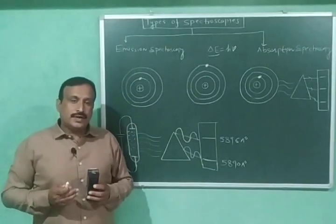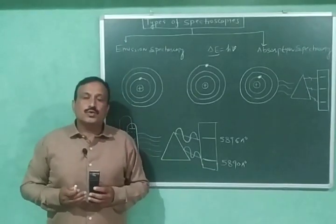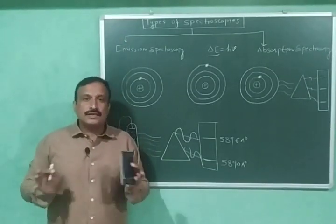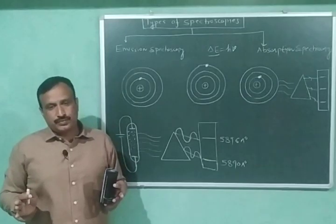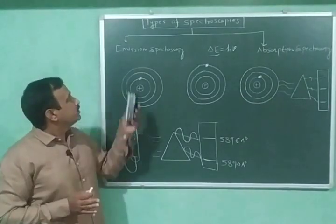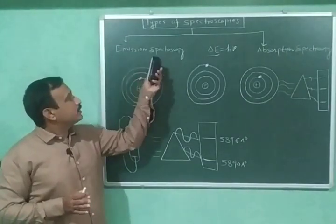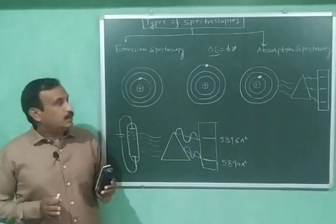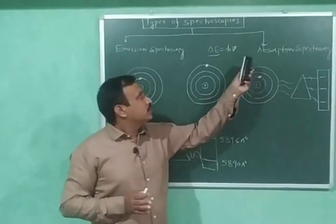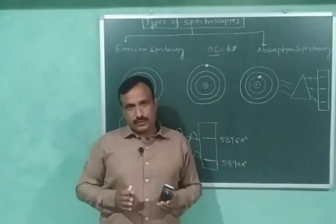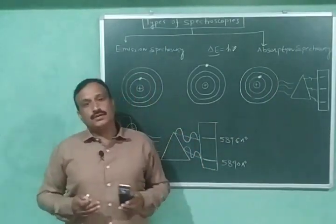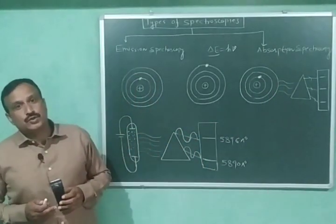Spectroscopy is broadly classified into two categories. The first one is emission spectroscopy and the second one is absorption spectroscopy. Let us start with emission spectroscopy.